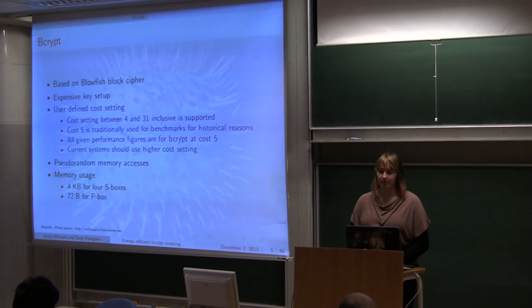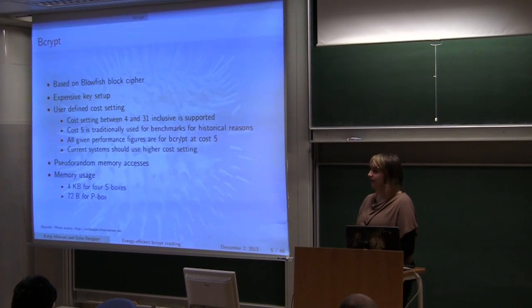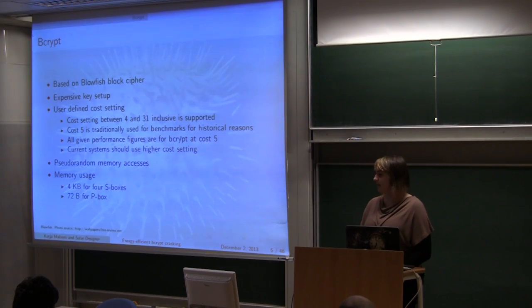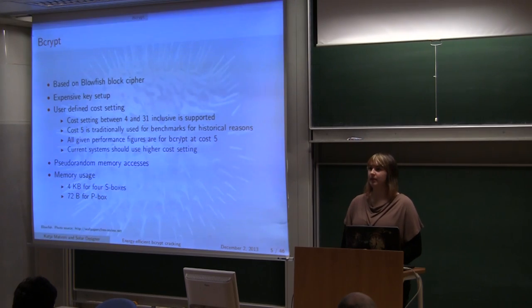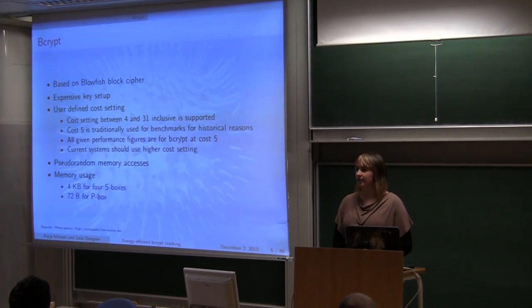Bcrypt is based on Blowfish Block Cipher. What's special about Bcrypt is its user-defined cost setting, where a user can control difficulty of computation. Another thing that makes Bcrypt difficult to implement on some platforms are random memory accesses. And the last thing is memory usage, where we have 4 kilobytes for storing S-Boxes and 72 bytes for storing P-Boxes. It's important to say that, for historical reasons, cost used for Bcrypt is 5, and all figures used in the talk will be for that cost setting, but it's not recommended to use it for protecting your own system. It should be higher, such as 10 or 12.